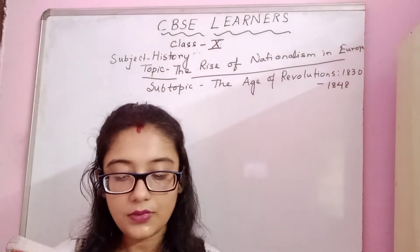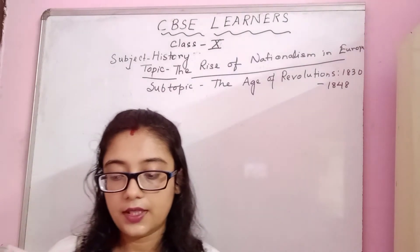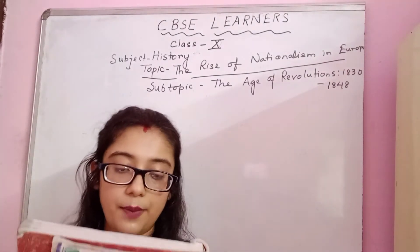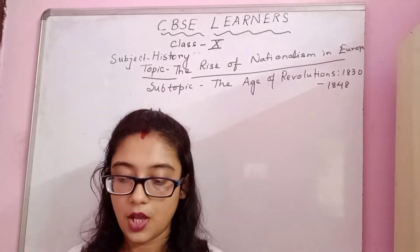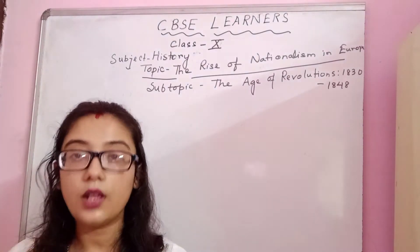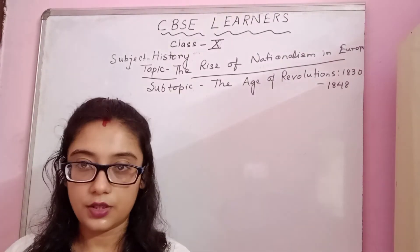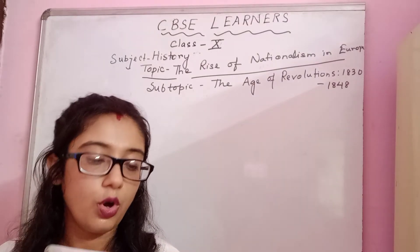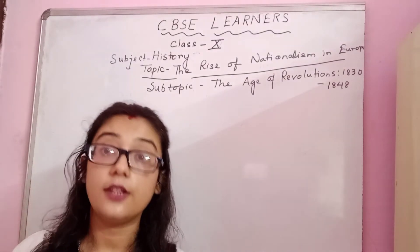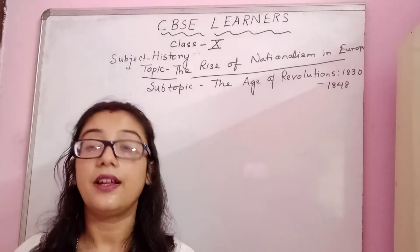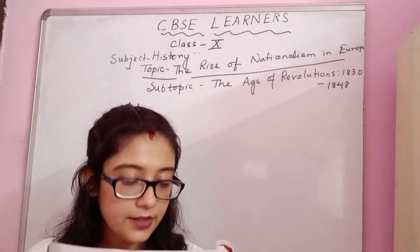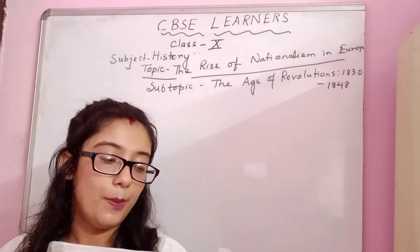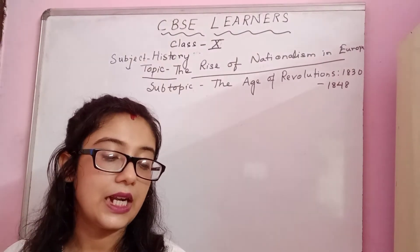They started in Italy, the German states, the provinces of the Ottoman Empire, Ireland, and Poland. All the revolutionary activities started in these parts of Europe. These revolutions were led by the liberal nationalists belonging to the educated middle class elite.